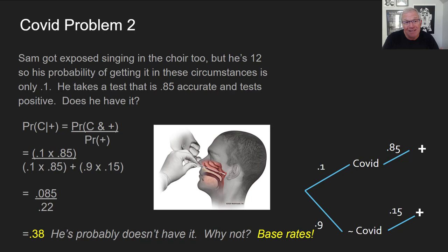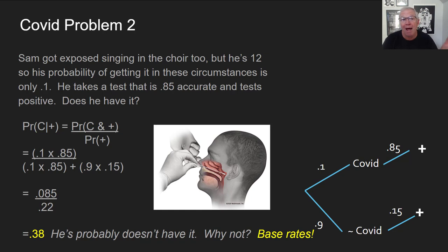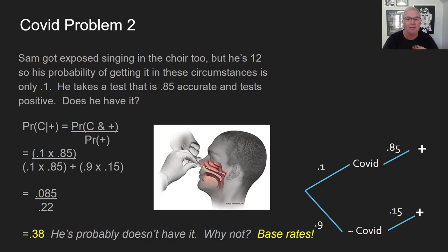Sam probably still doesn't have it. Why? Because his prior was different — his base rate was different. His initial probability of having it was only 10%, and that's why it matters. In the last case, Matt started at 0.3 and a positive test elevated him to 0.7. In this case, Sam started at 0.1 and a positive test elevated him to 0.38. That's why the base rate matters for pregnancy and other cases too.